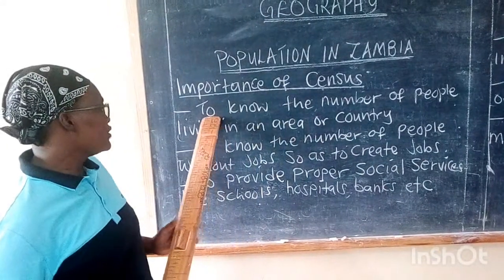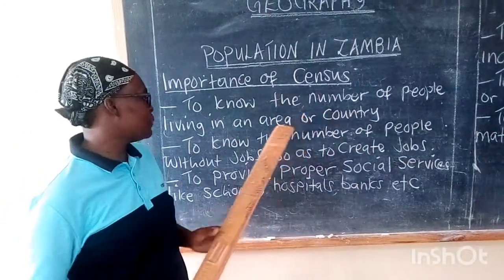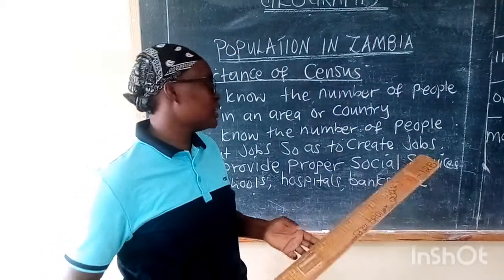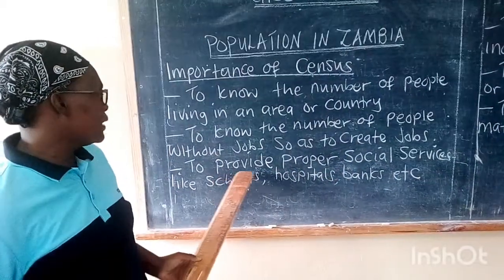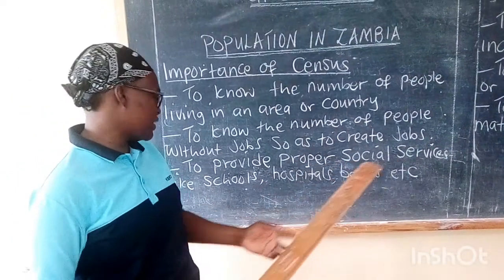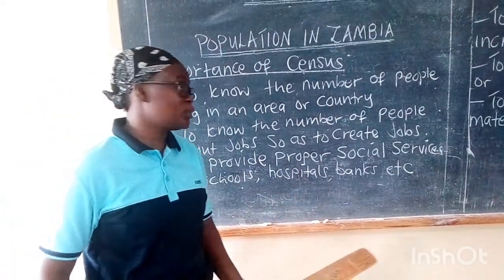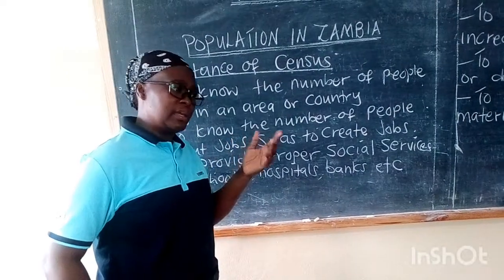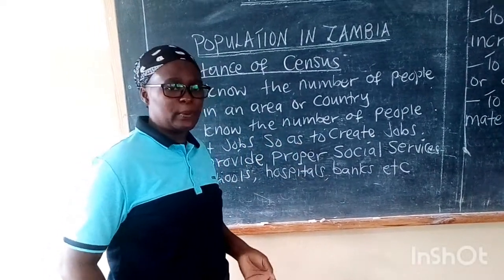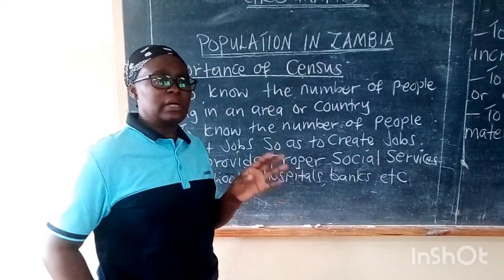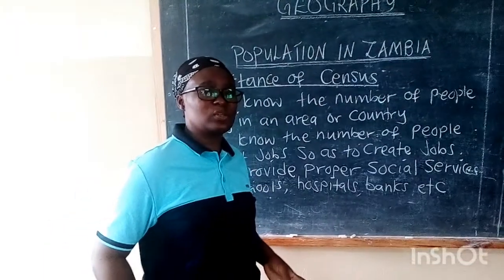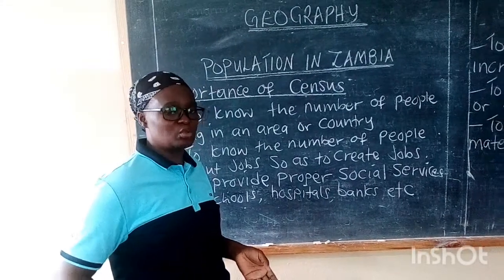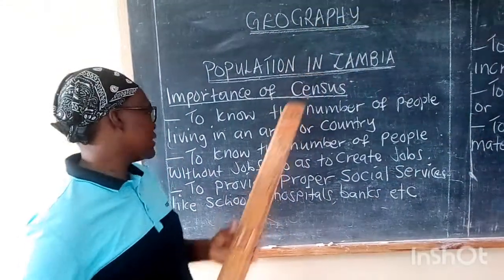One of the reasons we carry out census is to know the number of people living in an area. When you know the number of people, you will be able to provide proper social services such as schools and hospitals. When you know there are 15 million people in the country, you can determine how many hospitals or clinics need to be constructed.